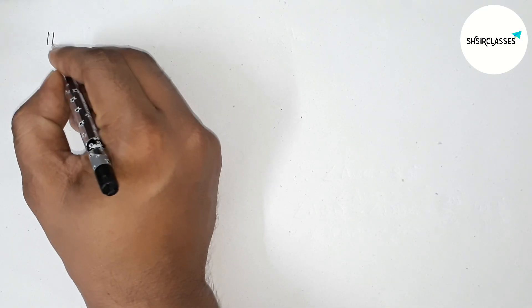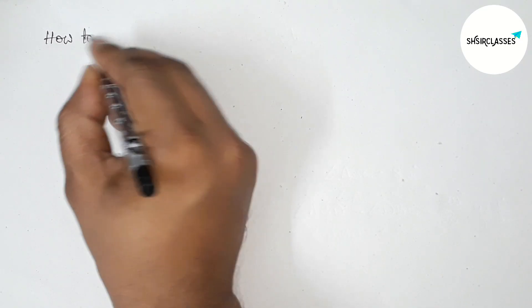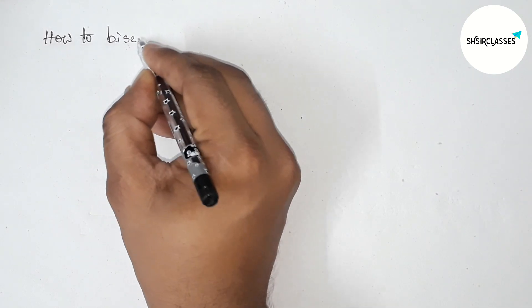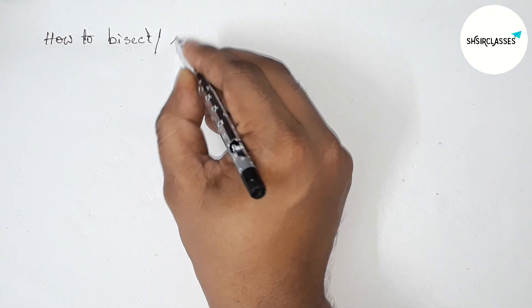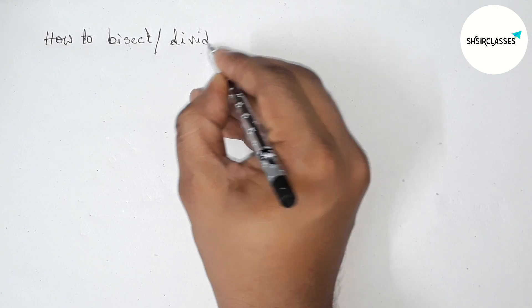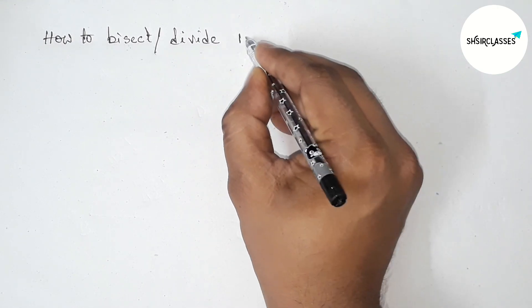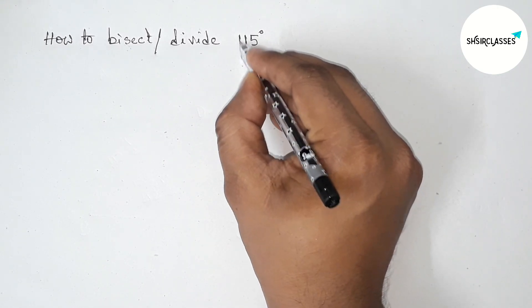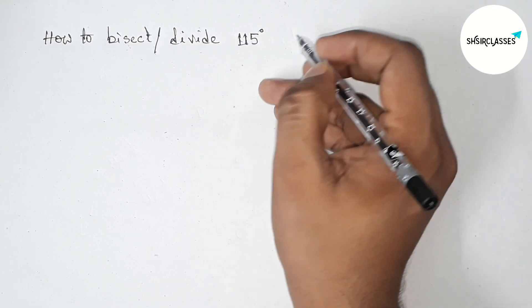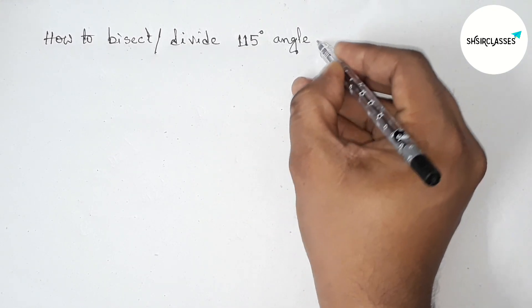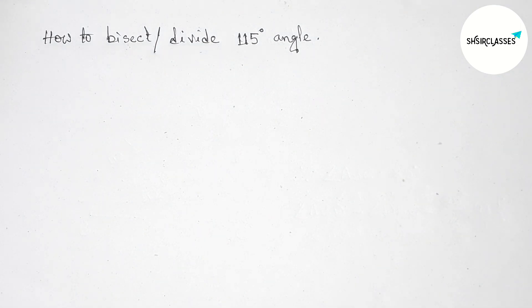Hi everyone, welcome to SI Share Classes. Today in this video we have to bisect or divide 115 degree angle in easy way. So please watch the video till the end. Let's start the video.